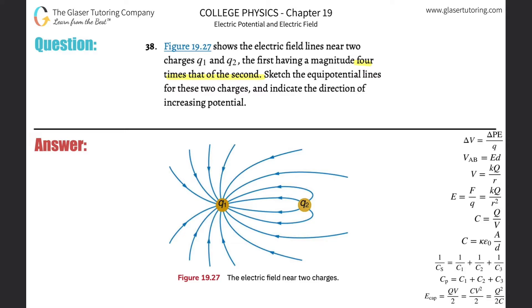Alright, so basically we know that the equipotential lines will be more or less concentric circles around the particular charge, and they have to be perpendicular to each of the electric field lines.